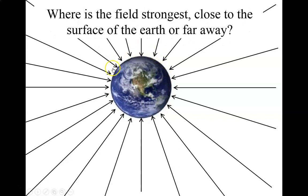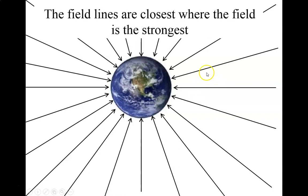Now, the field is the closest near the surface of the Earth. And it gets weaker as you get further away. What happens to these field lines as you go from closer to a greater distance? Notice these field lines separate. They get further apart. So, the field lines are the closest where the field is the strongest. And the field lines get further apart as that field gets weaker.